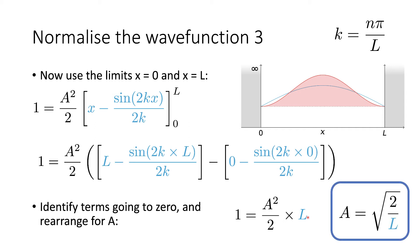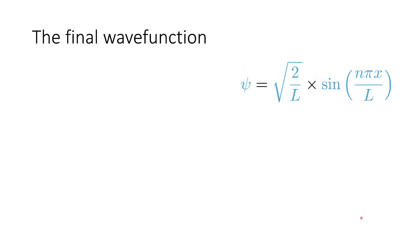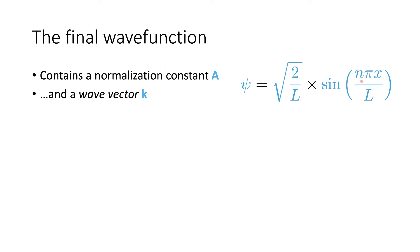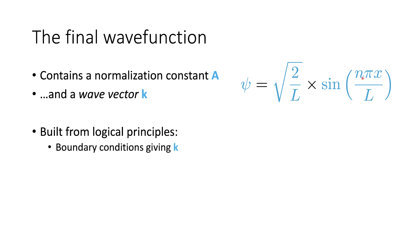This gives us our final value A = √(2/L). Our final wave function contains the normalization constant A = √(2/L) and the wave vector k = nπ/L. This is the final form of our wave function for the particle in a box. We've built it up from logical principles — the boundary conditions tell us the wave vector k, and the certainty of finding the particle in the box has allowed us to find the normalization constant.